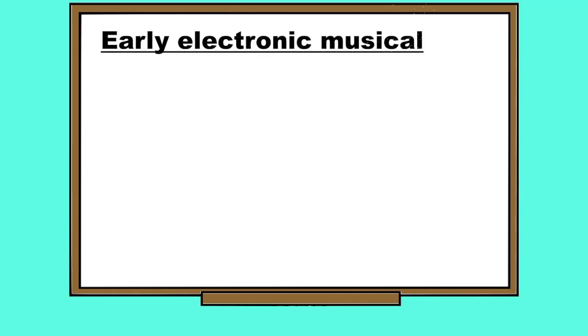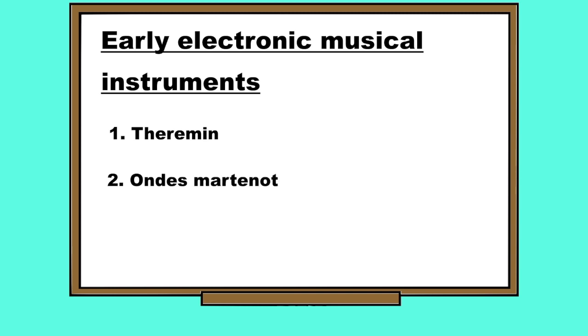Early Electronic Musical Instruments: 1. Theremin, 2. Ondes Martenot, 3. Vibraphone or Vibes.